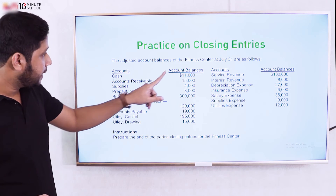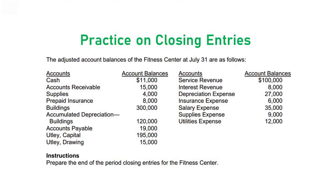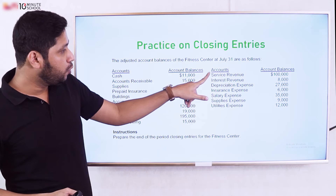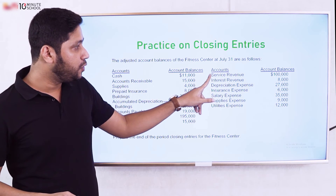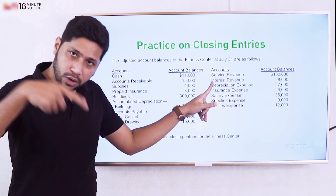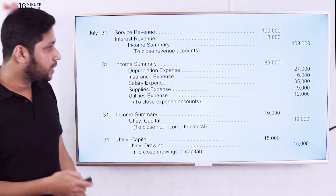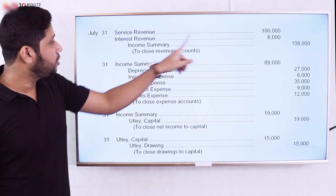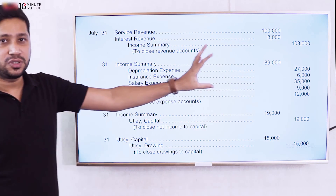For example, to close revenue items: revenue accounts such as service revenue and interest revenue are debited, and income summary is credited. This zeroes out the revenue accounts and transfers the total revenue balance into the income summary.